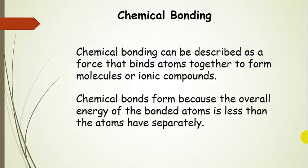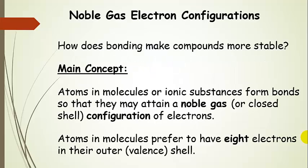If we were to take all of the separate atoms, they would have a certain amount of energy. But if we allow them to bond with each other in either covalent or ionic bonds, then that overall energy would be lower, and so that's very favorable. One of the main concepts in bonding is something called a noble gas electron configuration. If atoms — different elements — can achieve eight electrons in their valence shell, then they will be more stable. Atoms in molecules or ionic substances form bonds so that they can get this noble gas configuration of electrons, which in general is eight electrons.